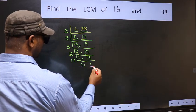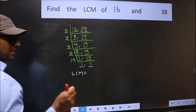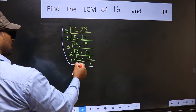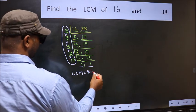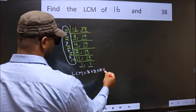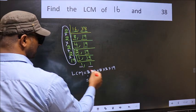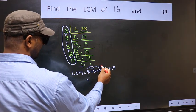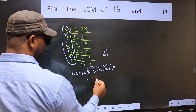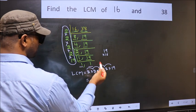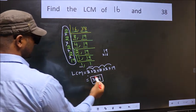We got 1 in both places, so our LCM is the product of these numbers. That is 2 times 2 times 2 times 2 times 19. Let us multiply: 2 times 2 is 4, times 2 is 8, times 2 is 16, times 19 — 16 times 9 is 144, and 16 times 1 is 16, plus 14 carried is 30. So 304 is our LCM.